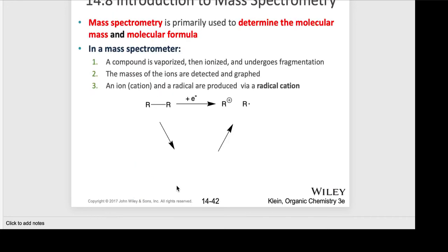Here we are typically determining the molecular mass and molecular formula — how many carbons, hydrogens, and whether there's an oxygen or nitrogen. In the mass spectrometer, the specialized instrument, a compound is vaporized and then ionized — there are different methods for this — and then basically it falls apart, which we call fragmentation. We can now detect the masses of the ions and graph them in a spectrum.